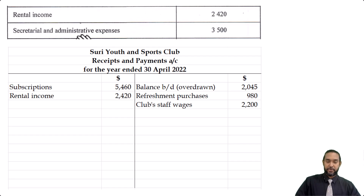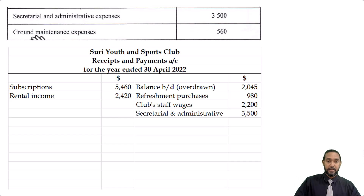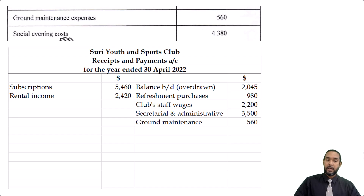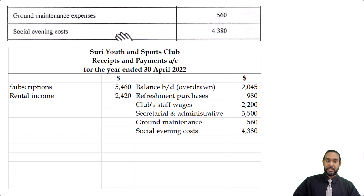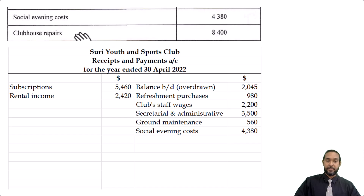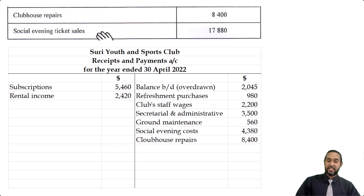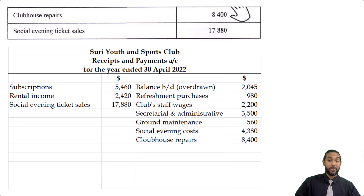Then we have secretarial and administrative expenses — another payment on the credit side. Same thing for ground maintenance cost of 560, and social evening cost of 4,380. All of them are payments; they all go on the credit side. The social evening ticket sales, however, is a receipt, and that's going to go on the debit side — 17,880.